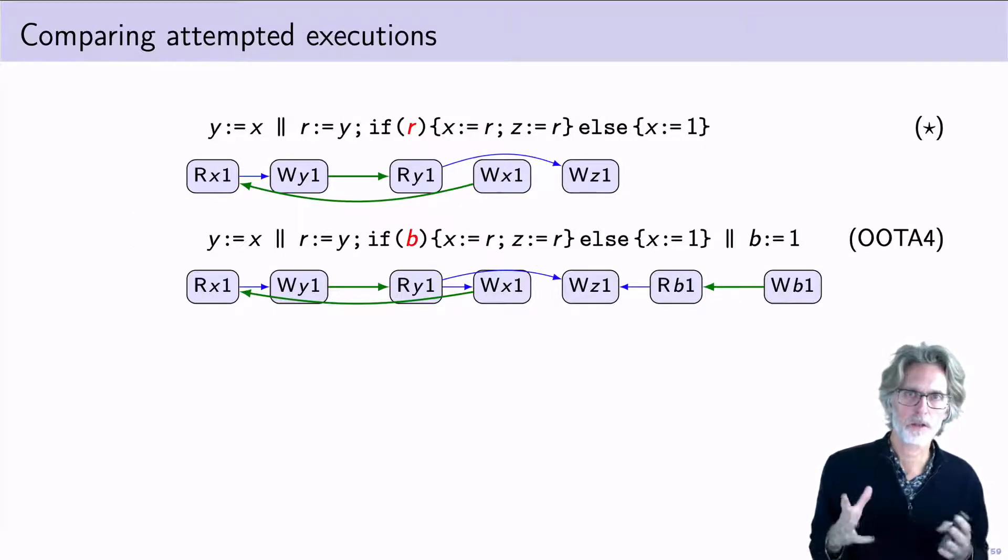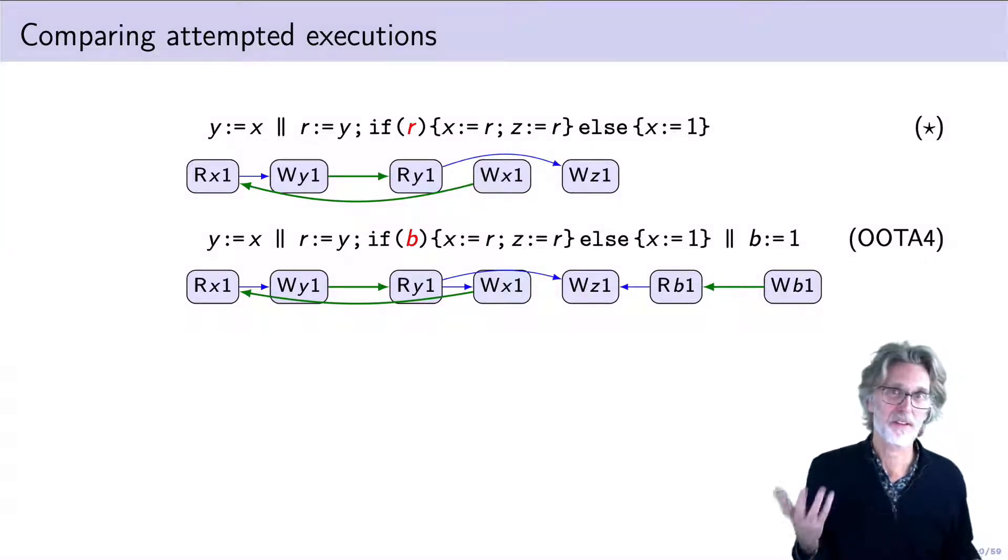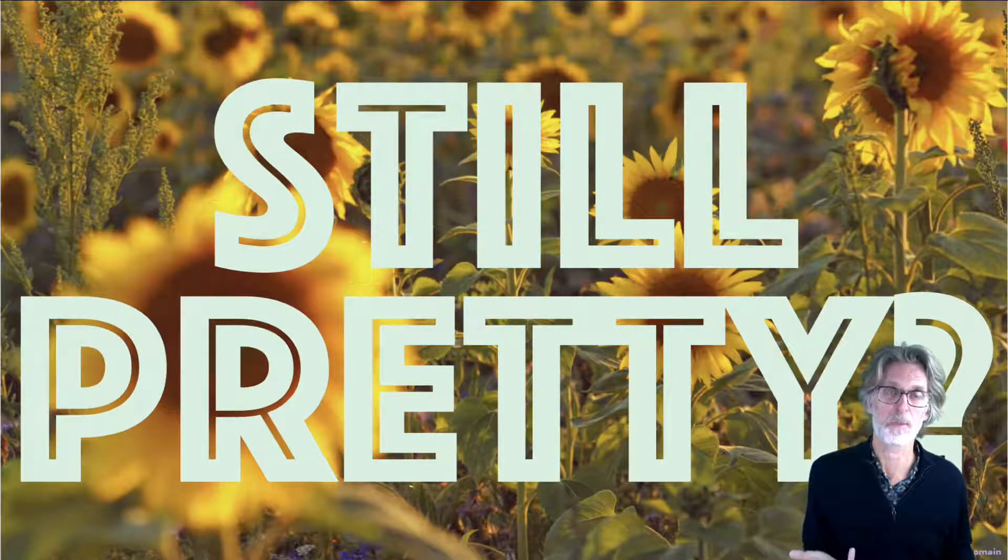In our model, the attempted executions are going to look like this. You can see that the STAR program will be allowed, whereas UTA4 is going to be disallowed due to the cycle. I expect some purists will throw up their hands in horror at this point.